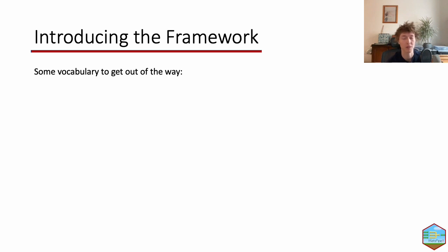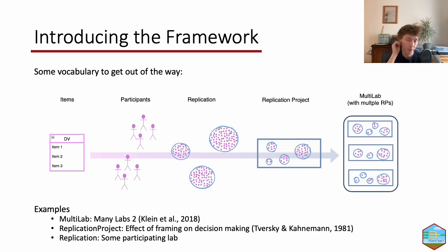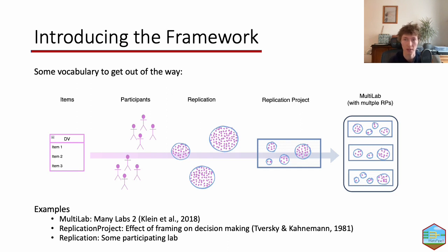Before I talk about the difficulties, I just want to get some vocabulary out of the way to make sure we're talking about the same things. This graphic represents the basic structure of multi-labs — and when I say multi-labs, I mean the multi-lab registered replication reports, Many Labs, and similar projects. All of these have a very similar structure on some level, and the first interpretable data would usually be item-level data.